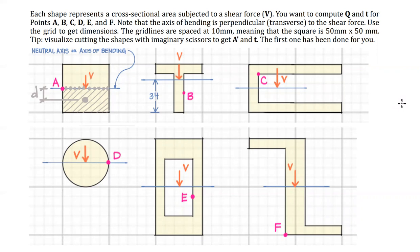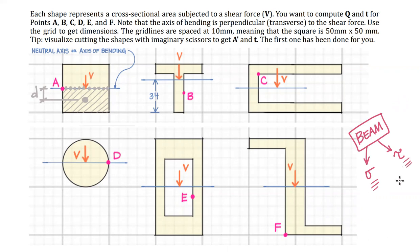Hello everyone, welcome back to my channel. This is a video about transverse shear stress. When we have a beam subjected to bending, we have two types of stresses: flexural stresses, which are normal stresses, and transverse shear stresses that get the tau symbol. So this video is all about tau — transverse shear stresses in beams.